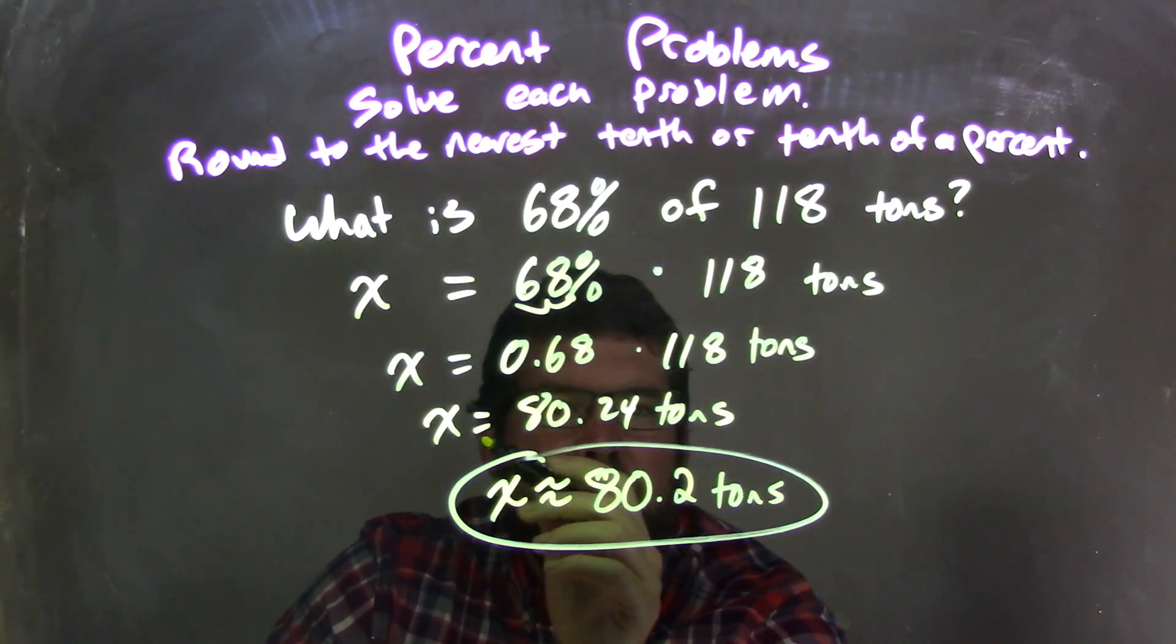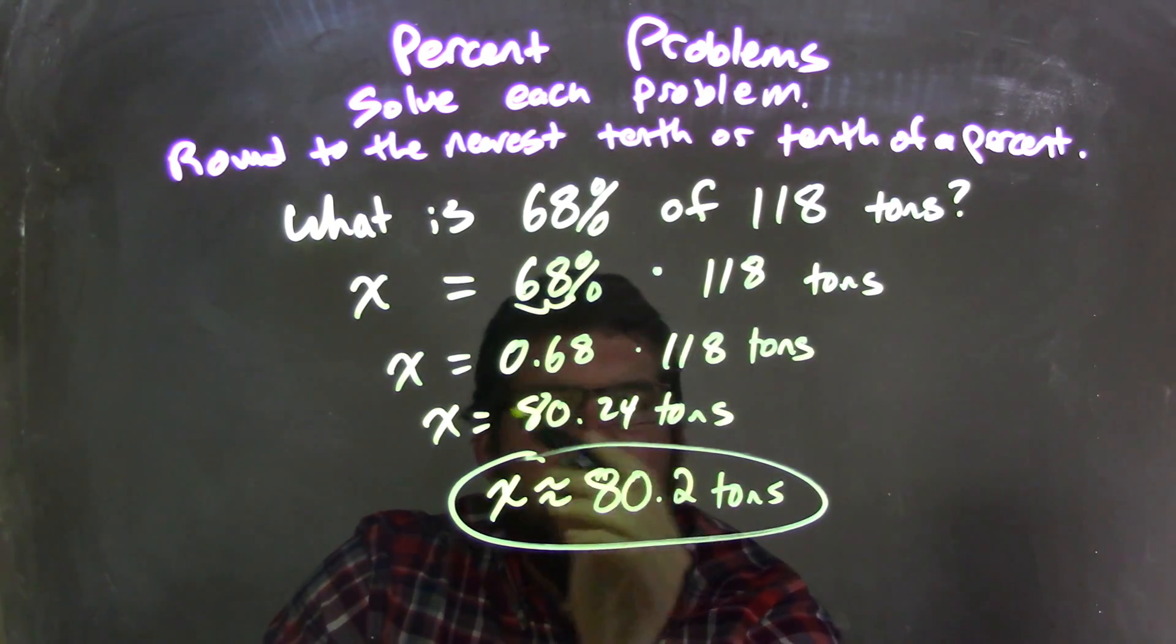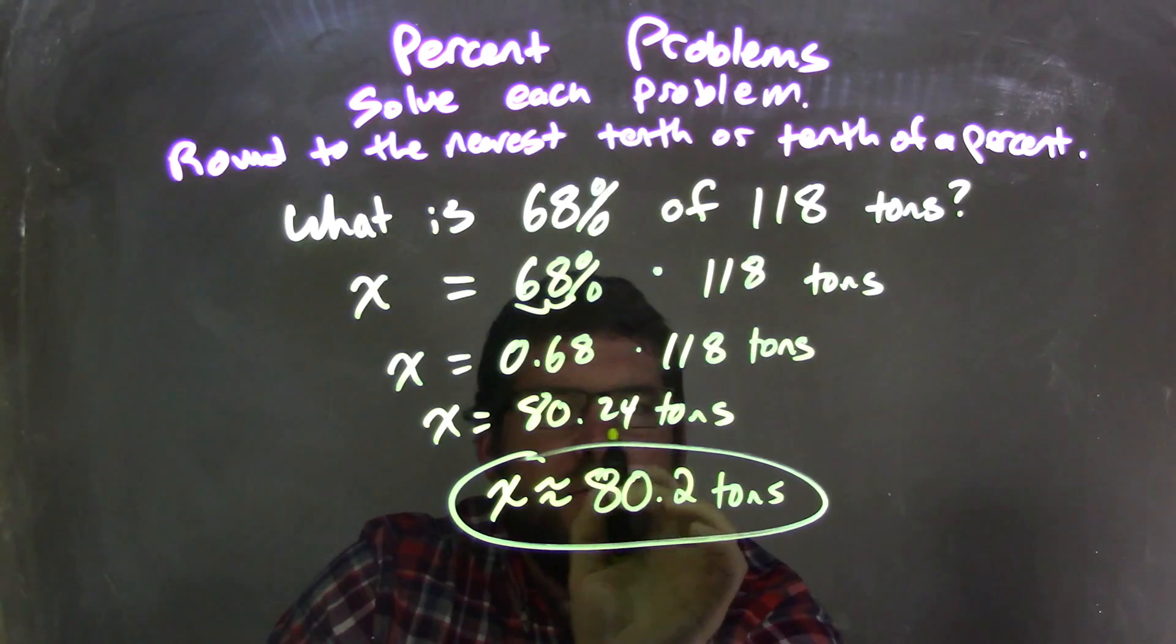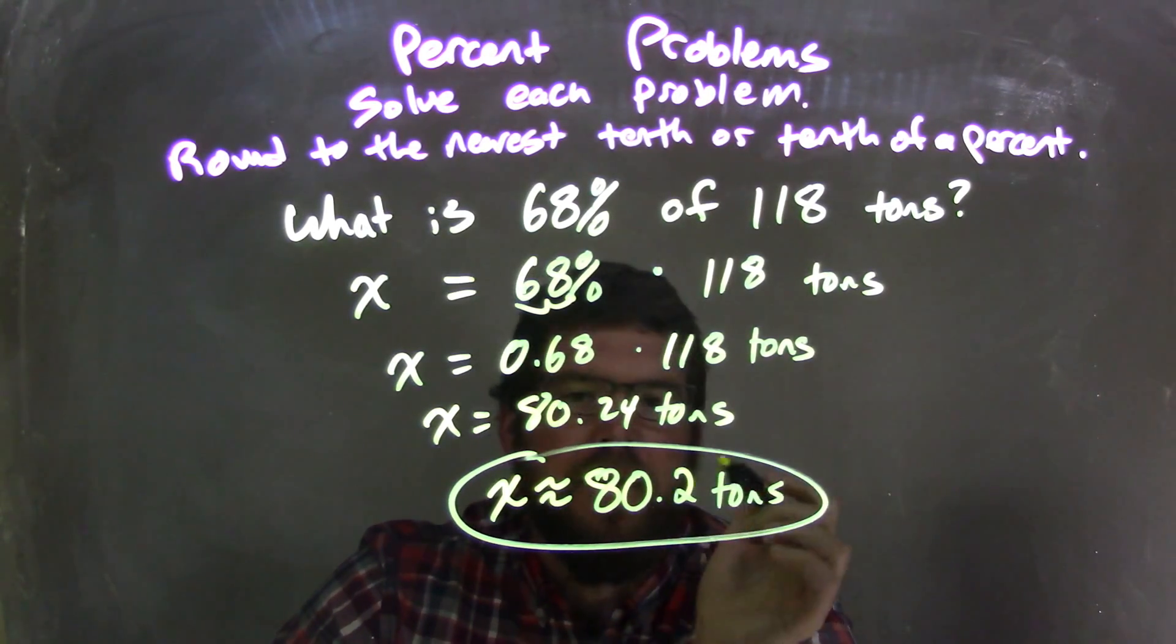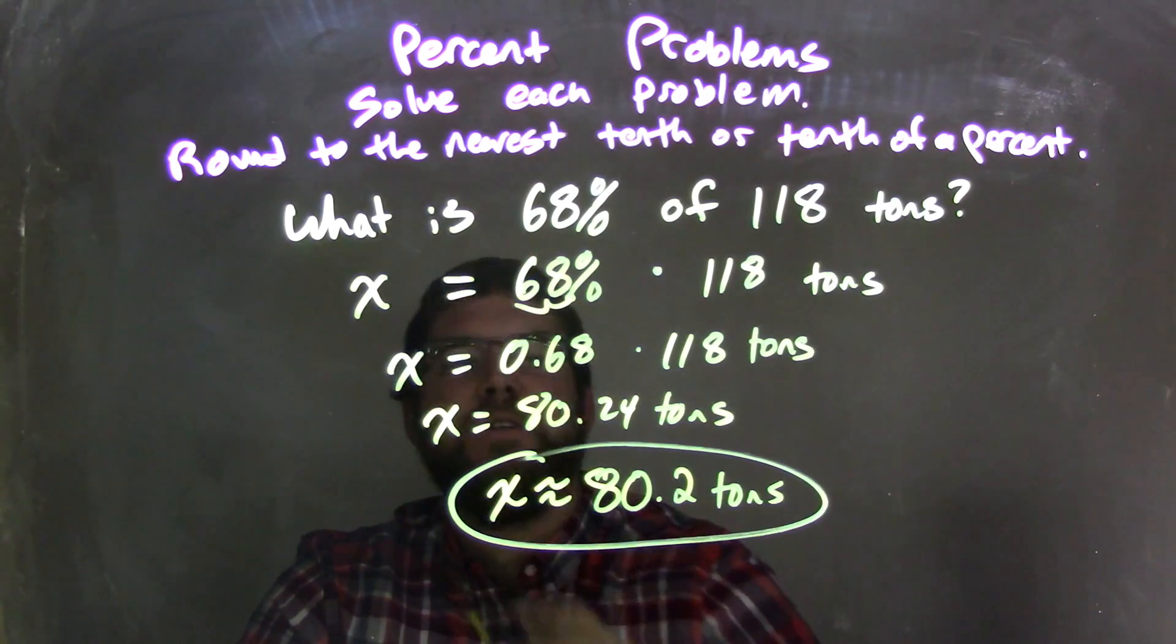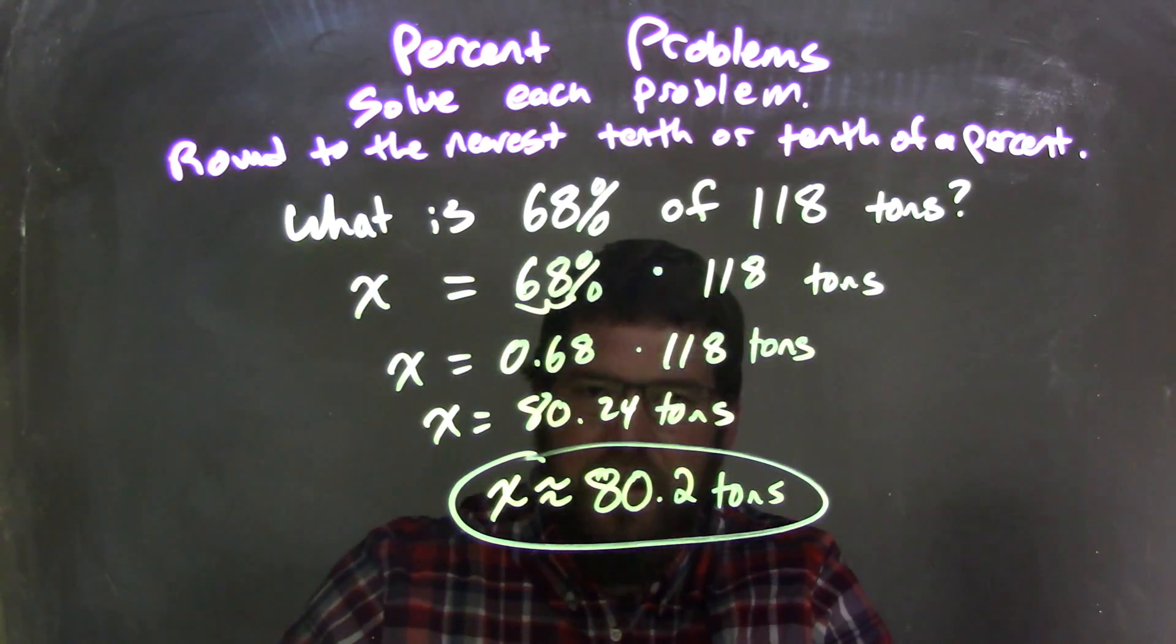So that's an equal sign because there was no rounding needed here. It's an exact answer. But then I rounded to the nearest tenth. I look at the 2 and the 4. The 4 causes the 2 to stay where it is. So our final answer is X is approximately equal to 80.2 tons, and that answers the question: 80.2 tons is 68% of 118 tons.